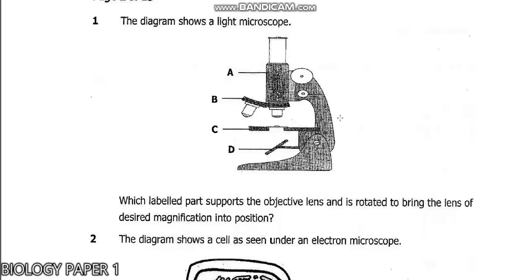Question 1 says the diagram shows a light microscope. We know what a microscope does - it gives a detailed inside of an object. Which labeled part supports the objective lens and is rotated to bring the lens of the desired magnification into the position? You need to know that.